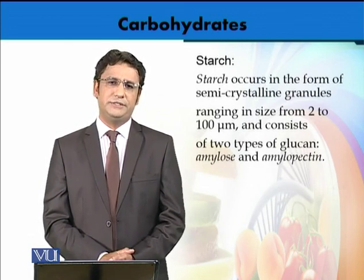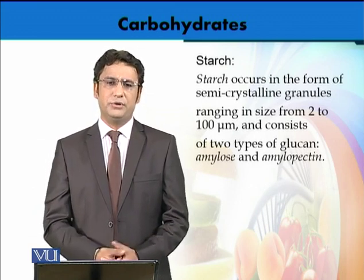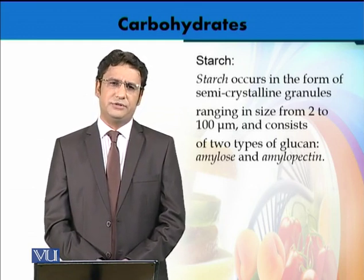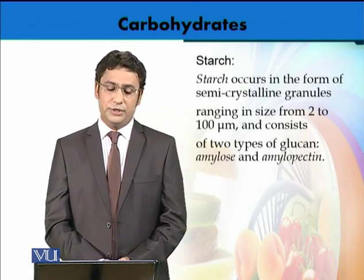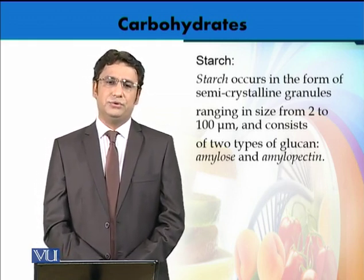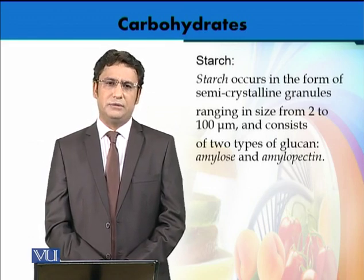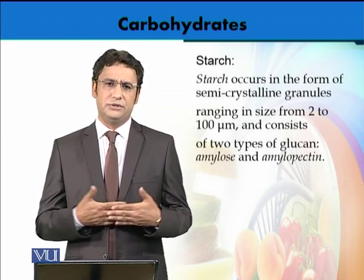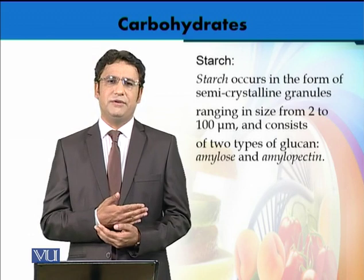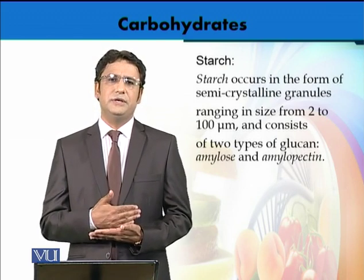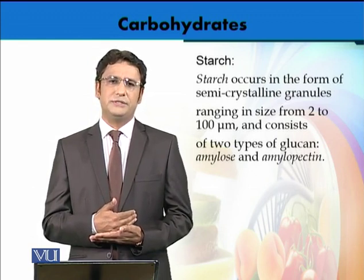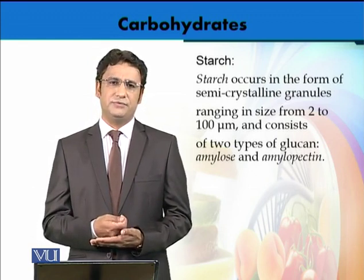Starch is one of the most abundant compounds in nature and it is found in the form of a semi-crystalline structure. Its size ranges from 2 to 100 micrometers and it consists of two units: amylose and amylopectin. Amylose consists of straight-chain units of monosaccharides, whereas amylopectin has branched structures — that is the part of starch called amylopectin.